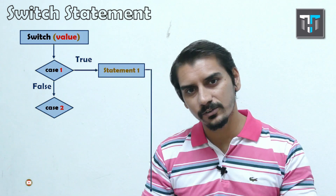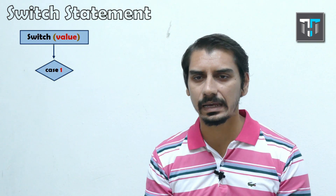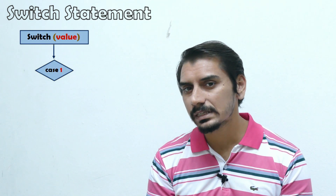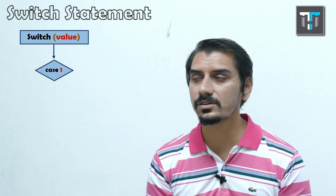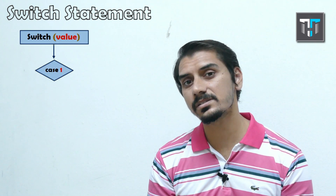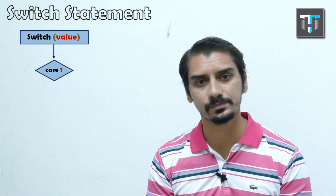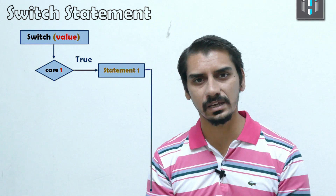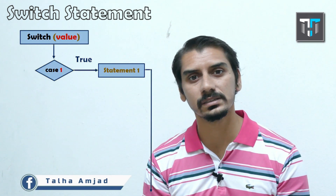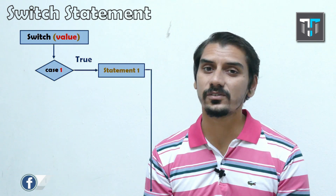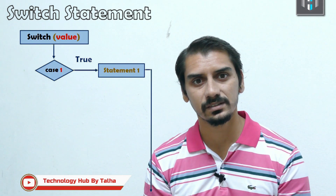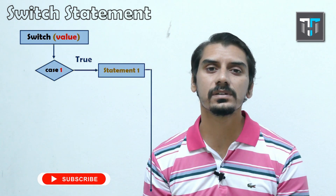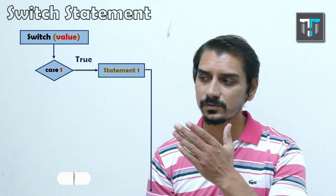Let's talk about the flow of the program using a switch statement. We have a switch statement with some value at the top. Which statement will be executed totally depends on this value within the parentheses of switch. We consider case 1 — if that value equals one, this case returns true and statement number one will be executed. The other cases won't be considered because we have a break statement after this.